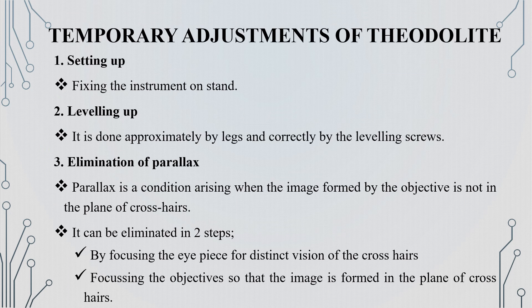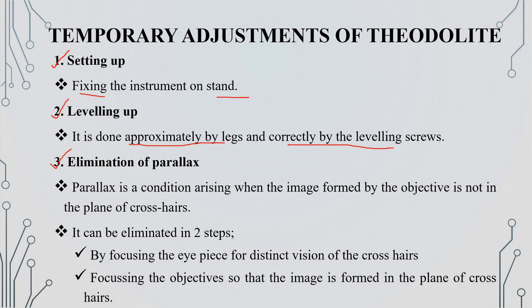We have a temporary adjustment for the theodolite. The main steps are: first, setting up; second, leveling up; and third, elimination of parallax. To set up, we fix the tripod legs and level the instrument using the foot screws. This is the leveling up process.